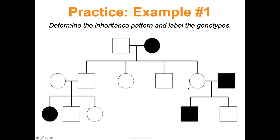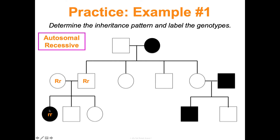Now let's determine the genotypes of everyone else. Everyone who is shaded is homozygous recessive (rr). Everyone unshaded has at least one dominant R. For some individuals we can determine whether they're heterozygous or homozygous dominant based on their children, but for others — such as unshaded children of two heterozygous parents — we can't tell if they're homozygous dominant or heterozygous, so we mark them with a question mark.